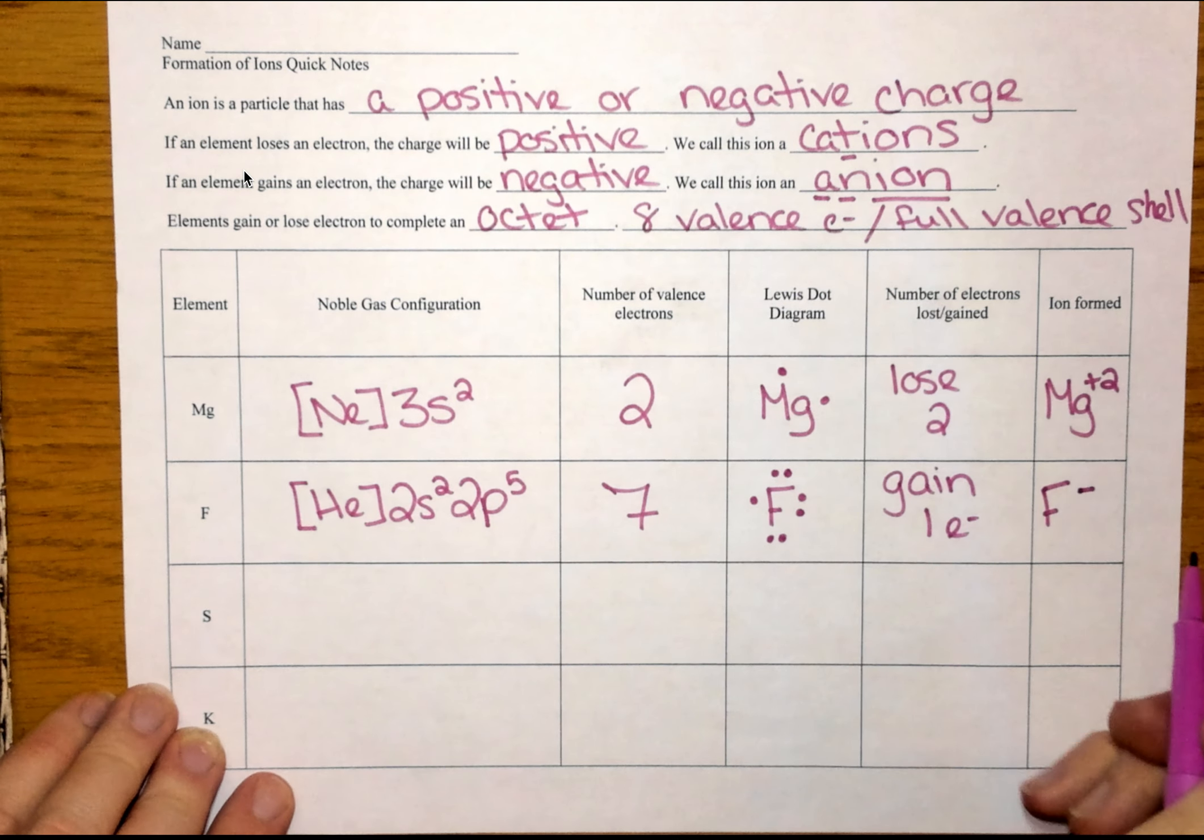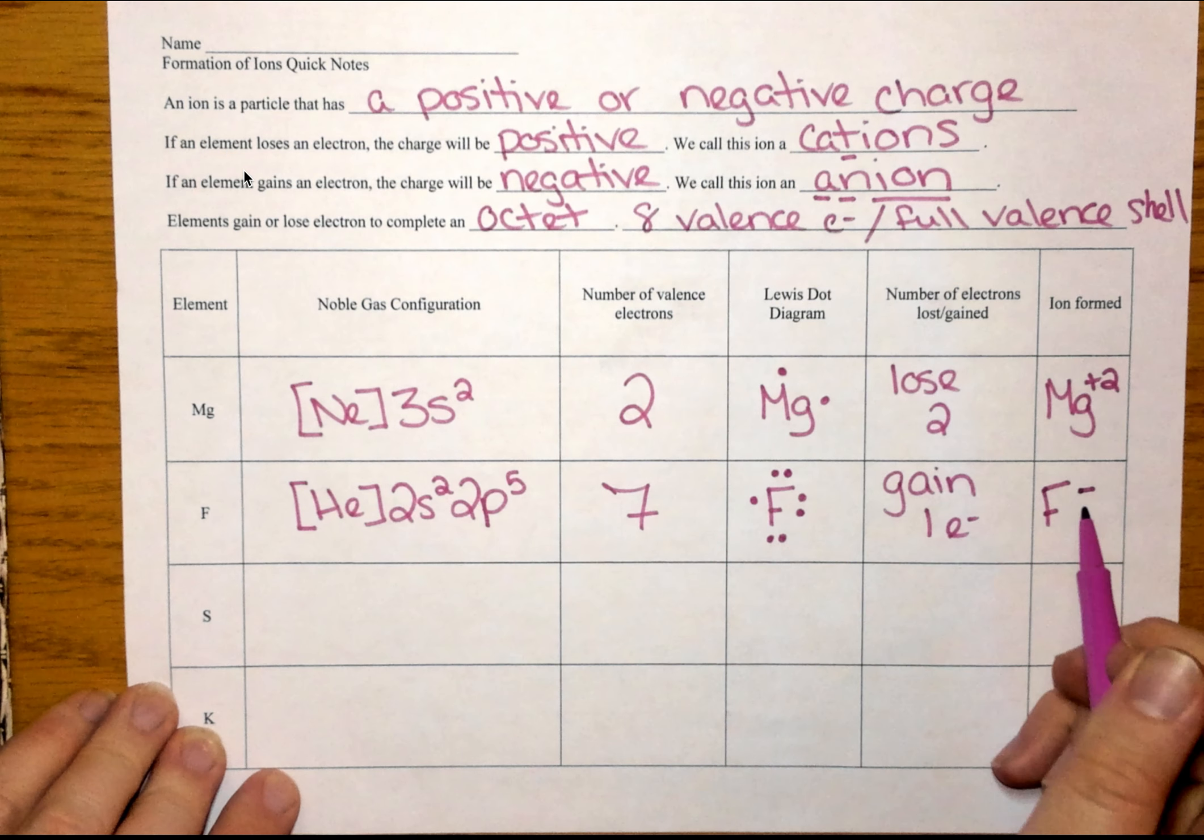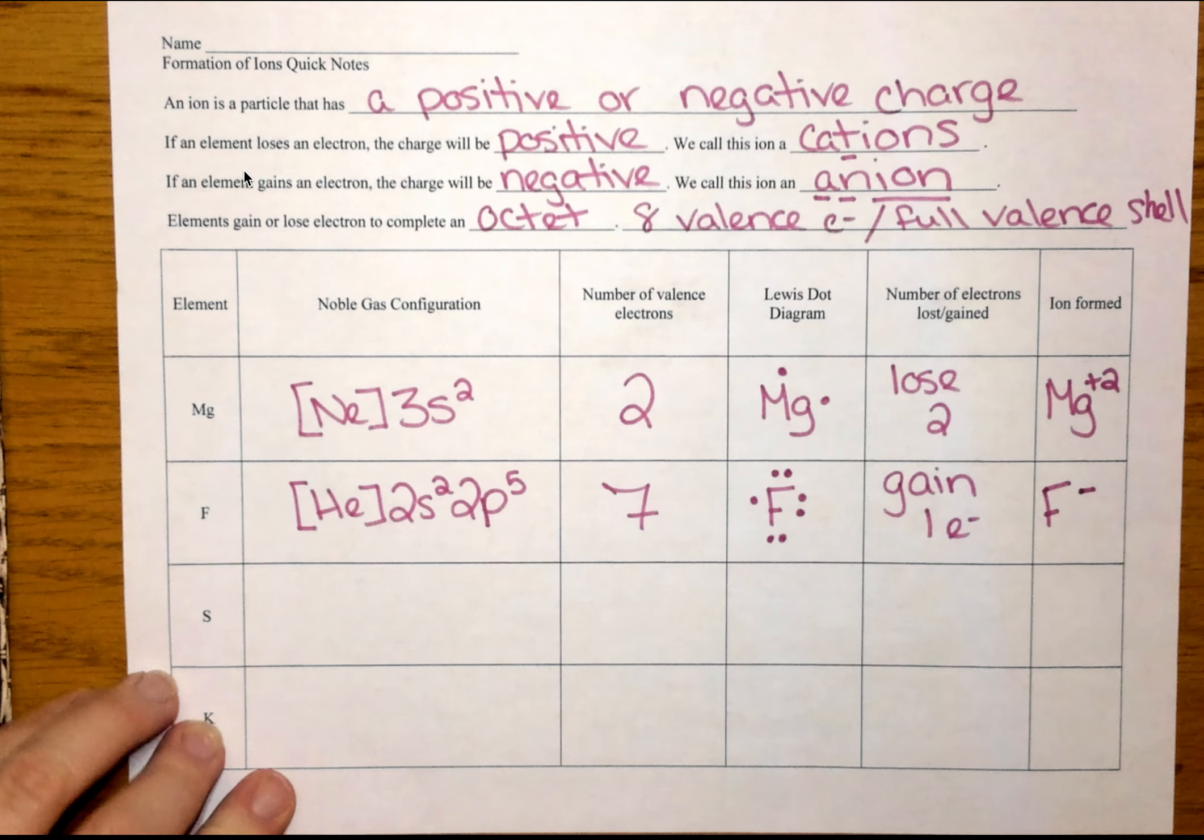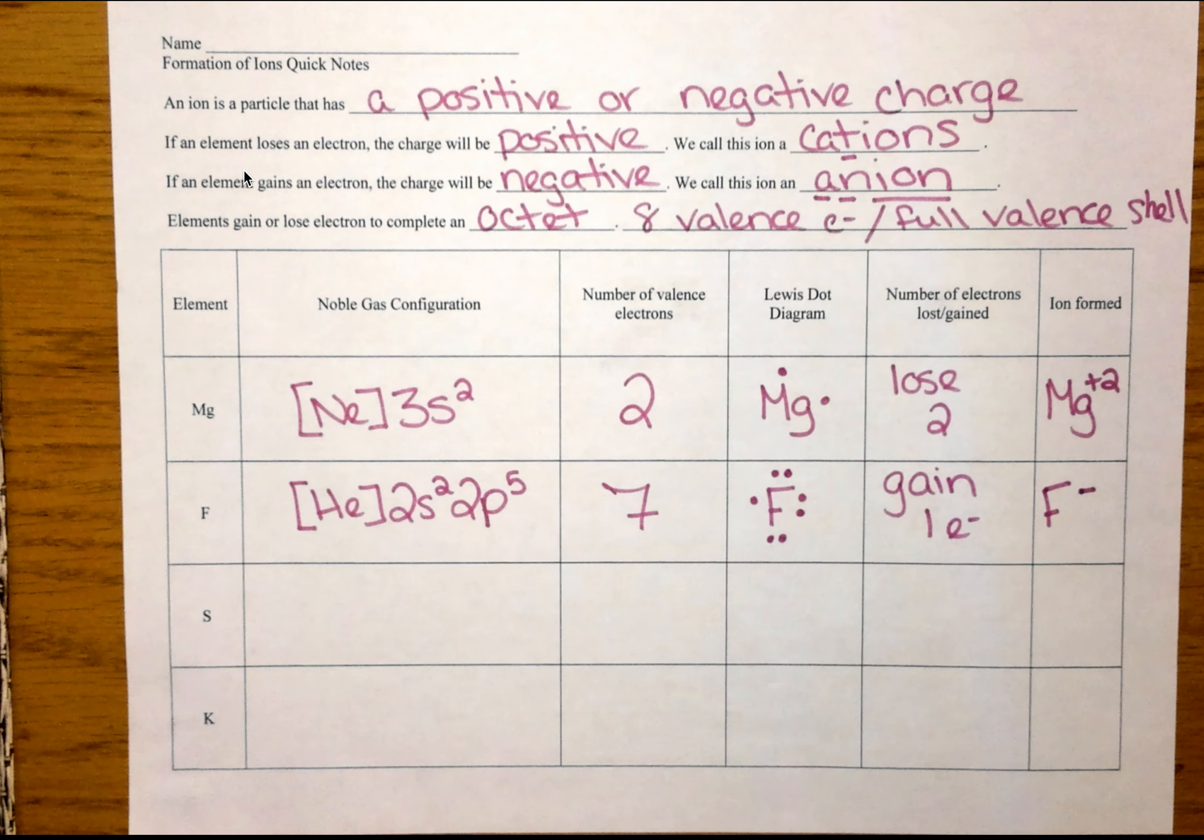So when it does, my charge becomes negative one. Now, you don't have to put a one. You can if you want to, but that minus sign just tells me the charge on that ion is negative one.